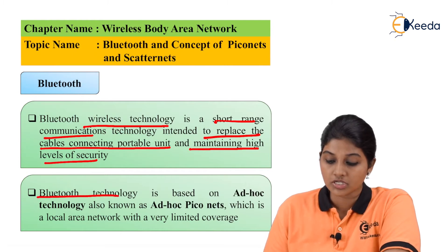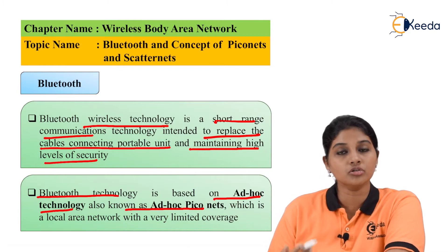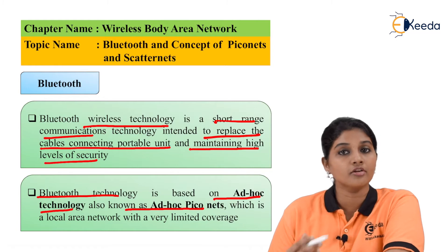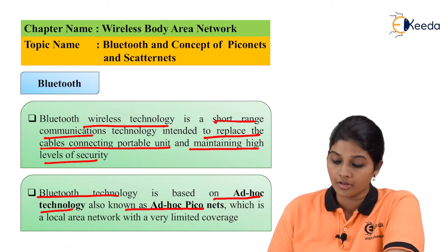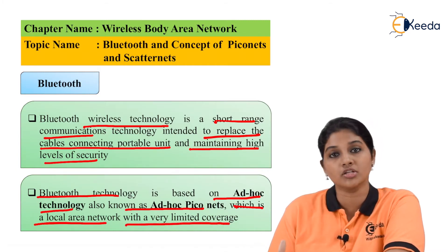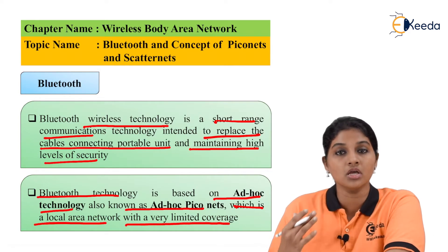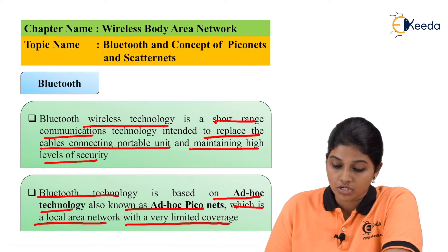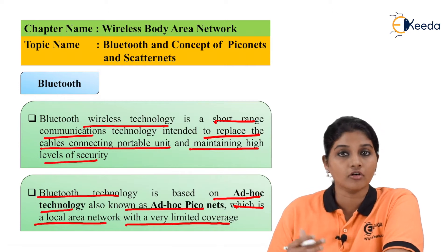Bluetooth technology is based on ad hoc technology, also called ad hoc Piconet. When two or more devices connect to each other using Bluetooth, they form a Piconet — a very small local area network with very limited coverage. The range of Bluetooth is not very high; it is very short, only 8 to 10 meters. Therefore, if a network is formed between two or more devices using Bluetooth, it is called a Bluetooth network, a Piconet, or simply an ad hoc network.